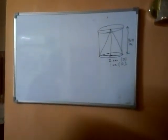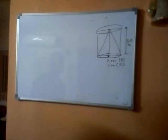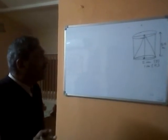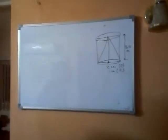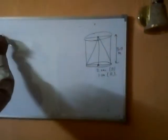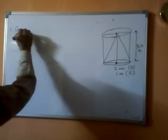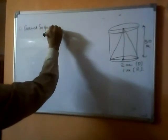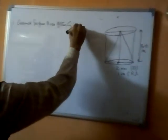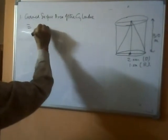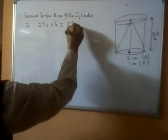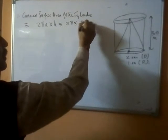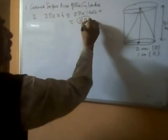We need to find the curved surface area of the cylinder and the curved surface area of the cone, as well as the area of the circular part at the top of the cylinder. The curved surface area of the solid cylinder is 2πrh = 2π × 1.0 × 3.0, which equals 6π square meters.